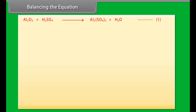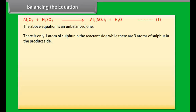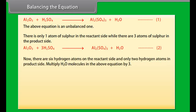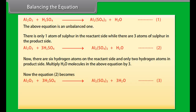Equations in which the number of atoms of different elements in the reactants are the same as on the product side are known as balanced equations. Starting with the unbalanced equation: Al₂O₃ + H₂SO₄ → Al₂(SO₄)₃ + H₂O. There is only one atom of sulfur on the reactant side while there are three on the product side. Balancing sulfur gives: Al₂O₃ + 3H₂SO₄ → Al₂(SO₄)₃ + H₂O. Now there are six hydrogen atoms on the reactant side but only two on the product side, so we multiply H₂O by 3.